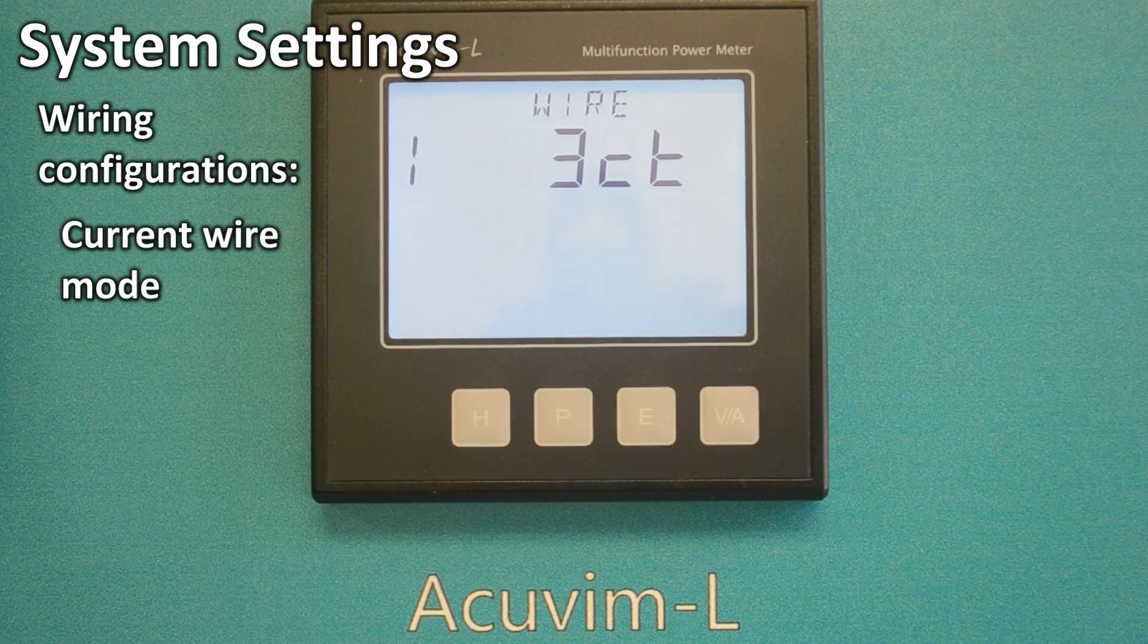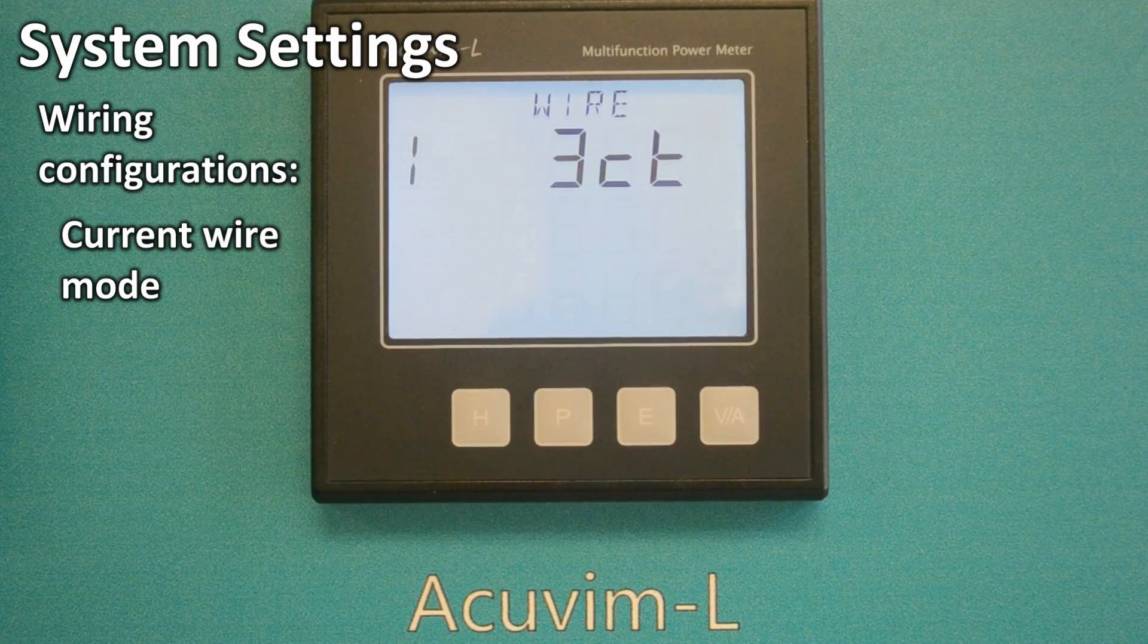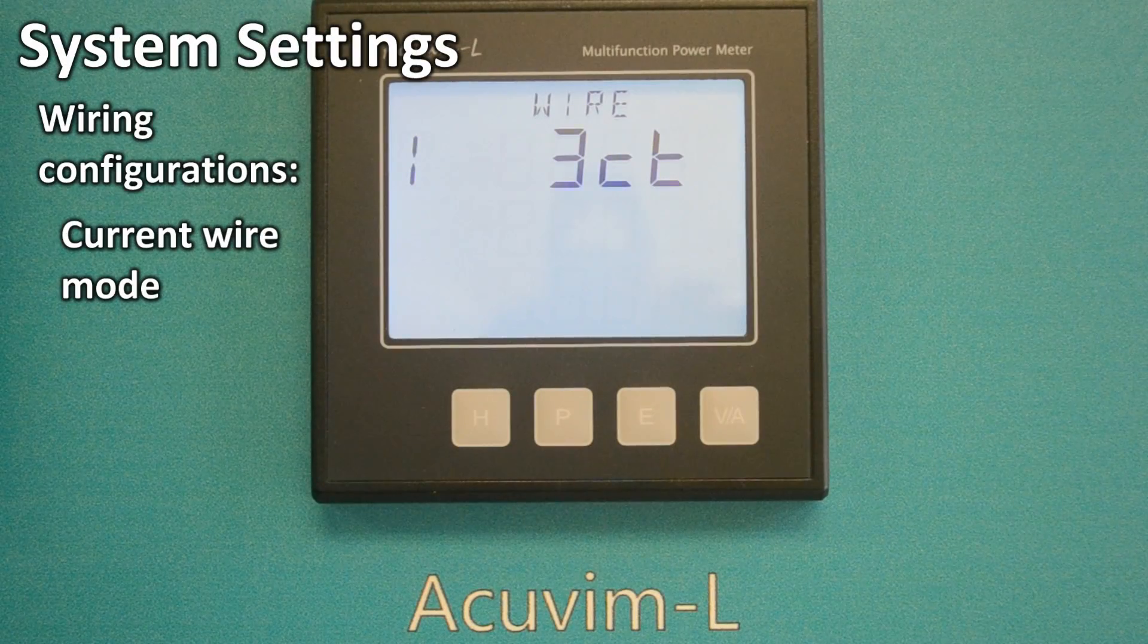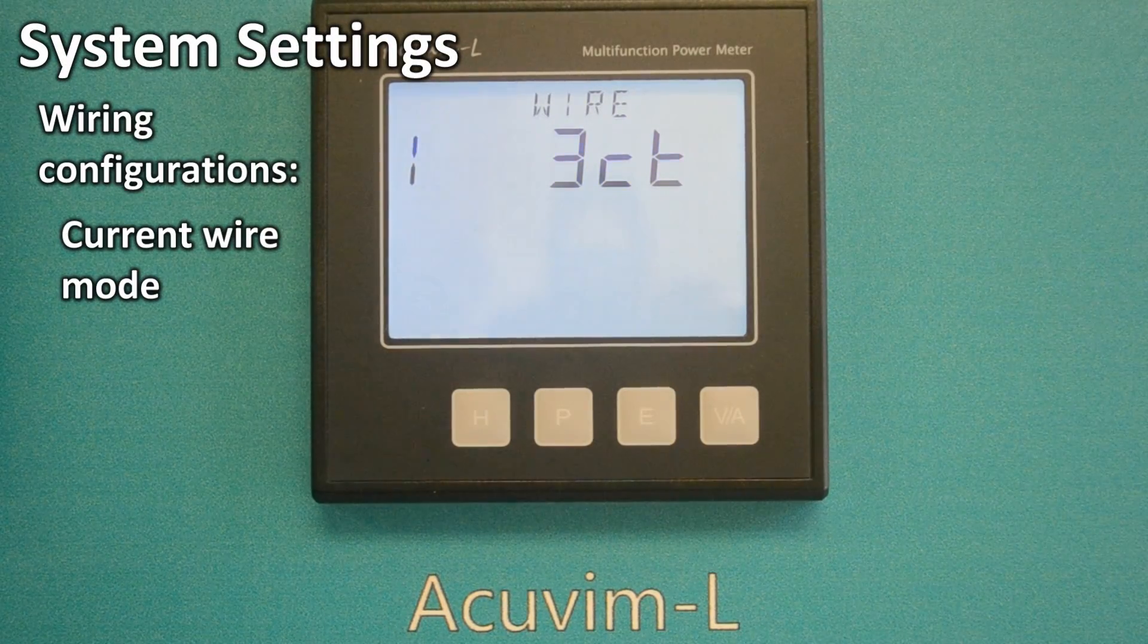Wire mode I3CT means the current wiring mode is 3 CTs. 3 line, 3 CT wiring is one of the most commonly used in low voltage systems.